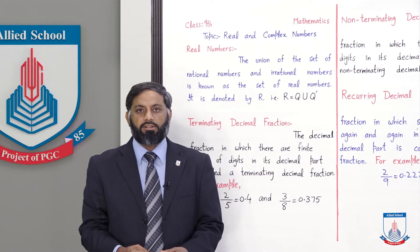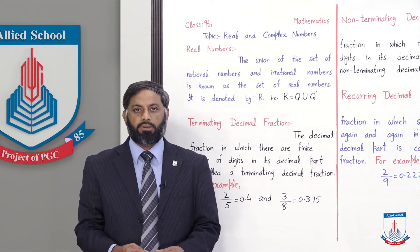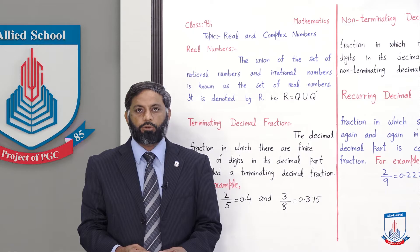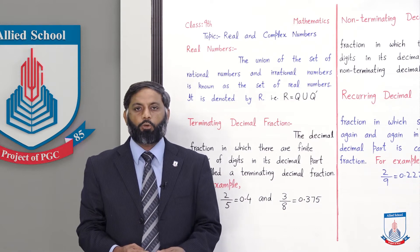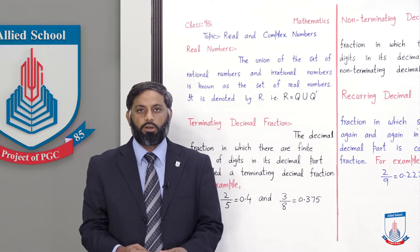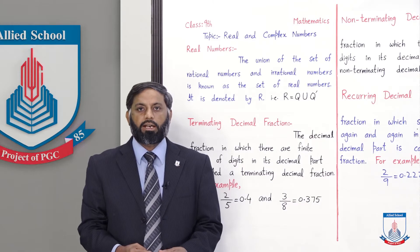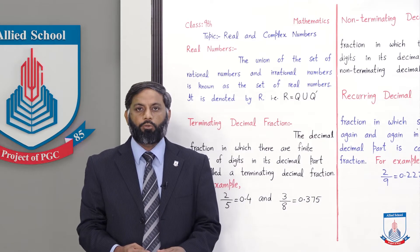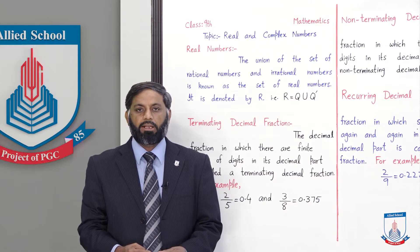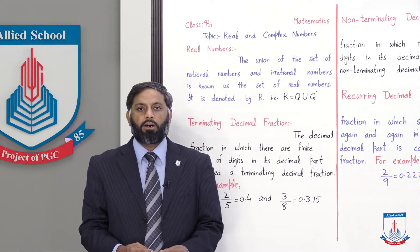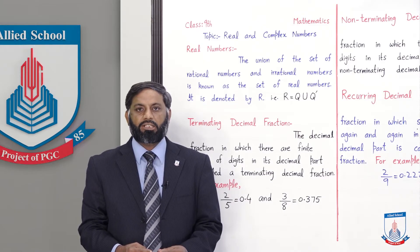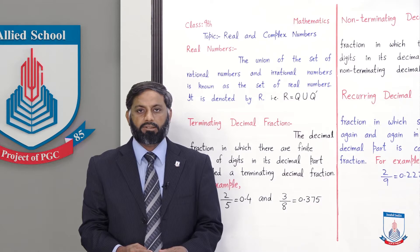Real numbers کا set سب سے بڑا set ہوتا ہے — rational اور irrational numbers کو combine کریں تو set of real numbers بنتا ہے۔ Rational numbers میں تمام natural numbers، whole numbers، اور integers شامل ہیں۔ لہذا real numbers superset ہوگا تمام number sets کا، اور باقی تمام sets اس کے subsets ہوں گے۔